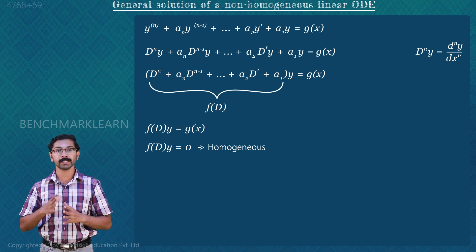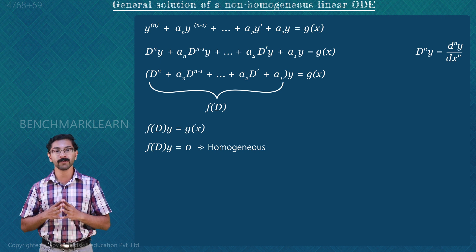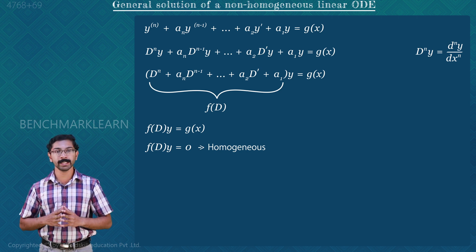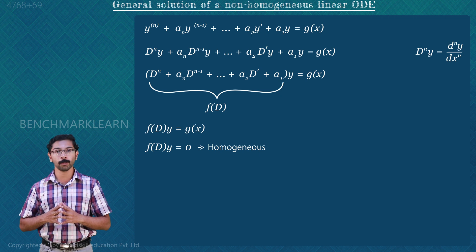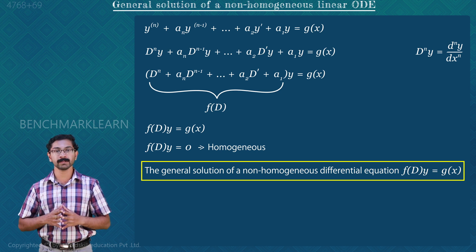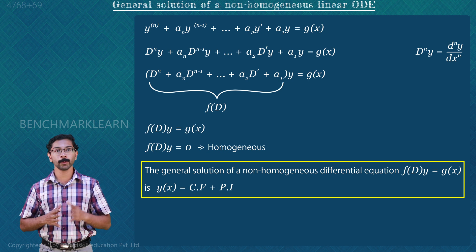Our aim is to find the general solution for this non-homogeneous differential equation. The general solution of a non-homogeneous differential equation differs from that of a homogeneous differential equation, but we need to use the solution of the homogeneous differential equation in order to find it. The general solution has two parts: the complementary function (CF) and the particular integral (PI). The general solution is given by y(x) = CF + PI.